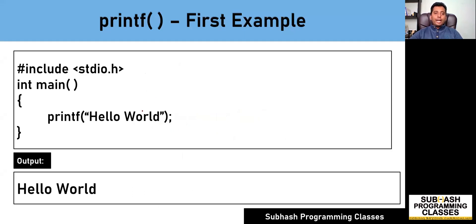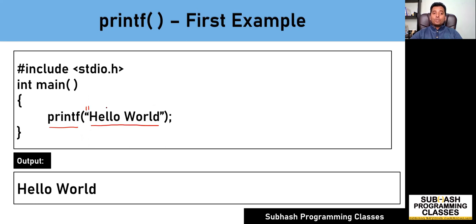As you can see on the screen, I have written a very simple C program to print hello world on the screen. To print these characters, hello world, I have made use of a function called printf. Printf is a standard C library function which is used to print certain characters on the screen as output.